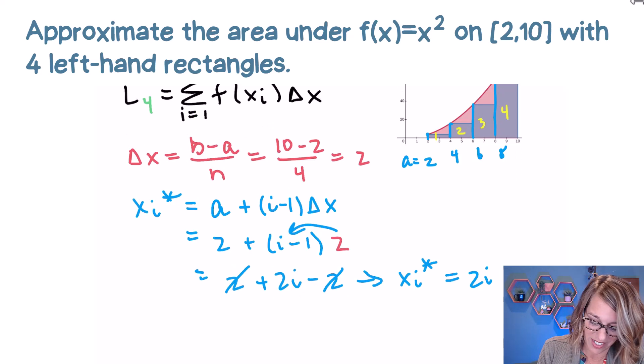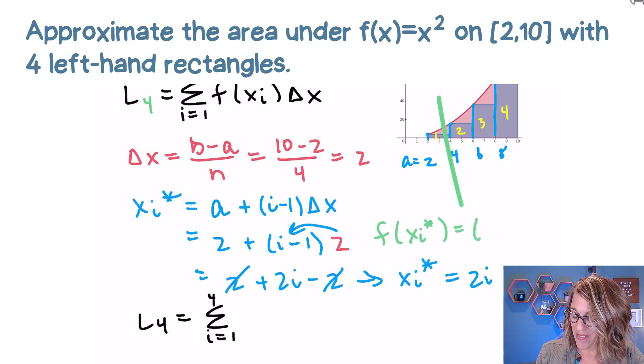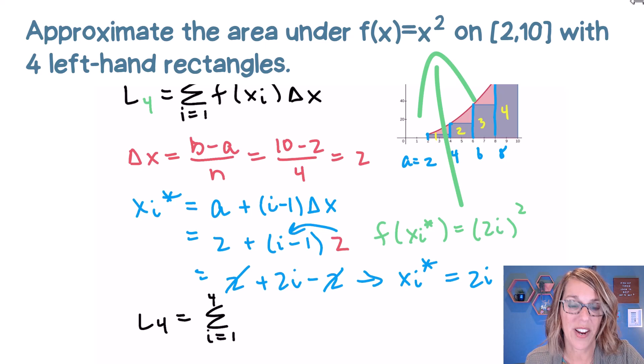Let's get all of this into our formula. So L sub four is equal to, so it's going to be that sum as i runs from one to four, remember i is counting off those rectangles, f of x sub i. Well, I know that, let me actually put it up here for a sec, f of x sub i star is going to be that value squared. So that's going to be our two i squared.